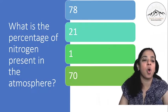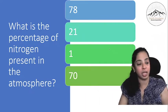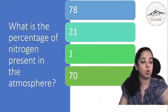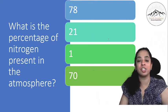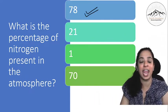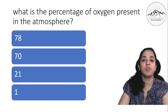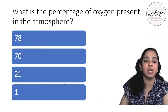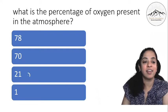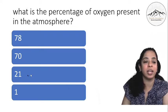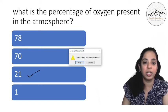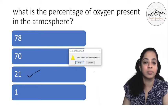Next, what is the percentage of nitrogen present in the atmosphere? So we all, if we remember that pie chart, it is very clear nitrogen is 78%. What is the percentage of oxygen present in the atmosphere? Again, is it 78, 70, 21 or 1? It is 21.